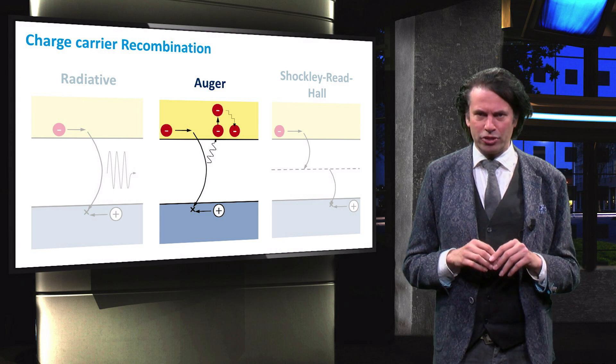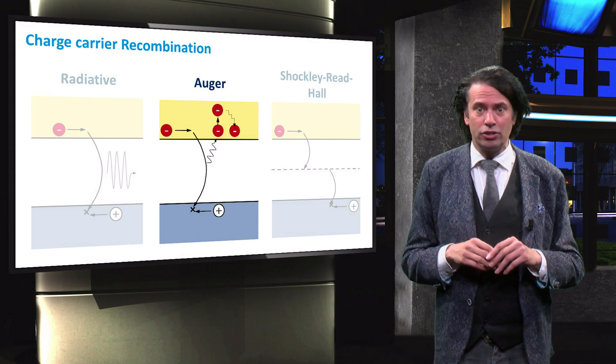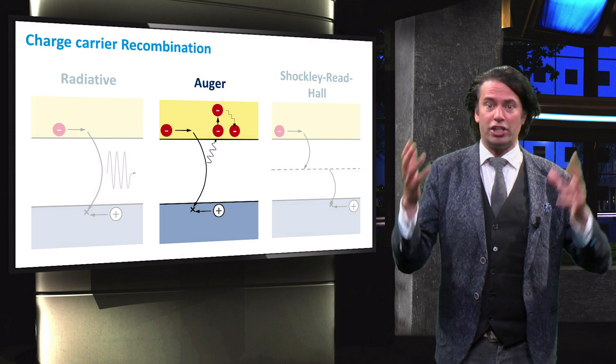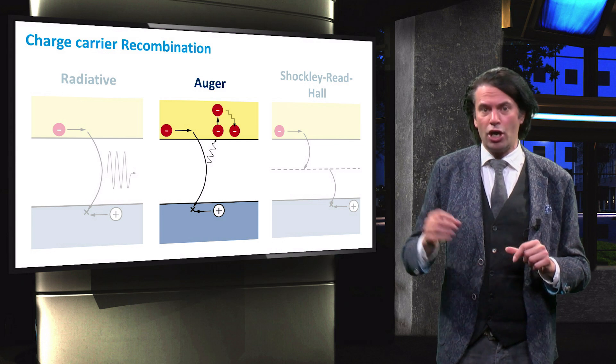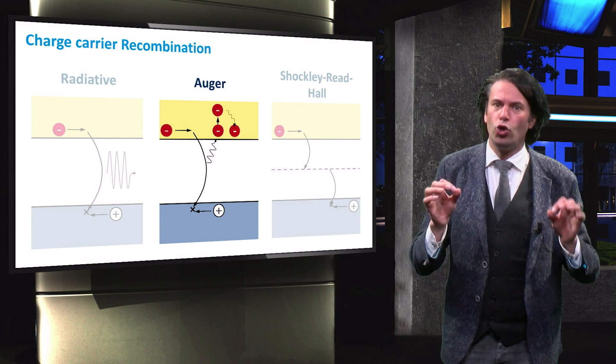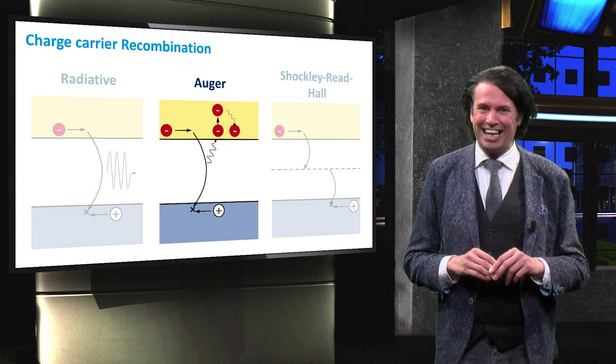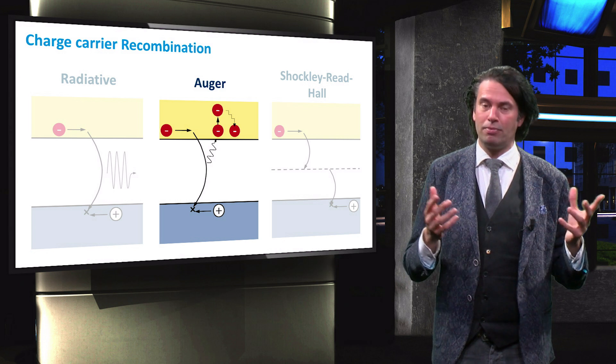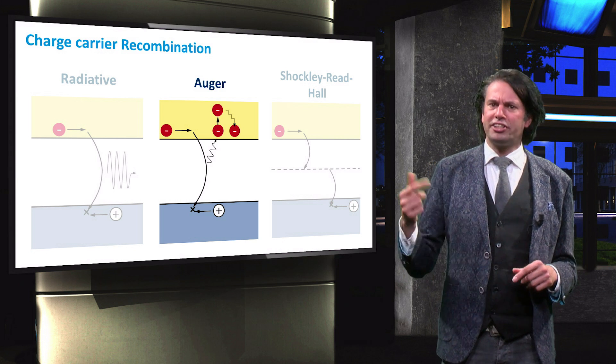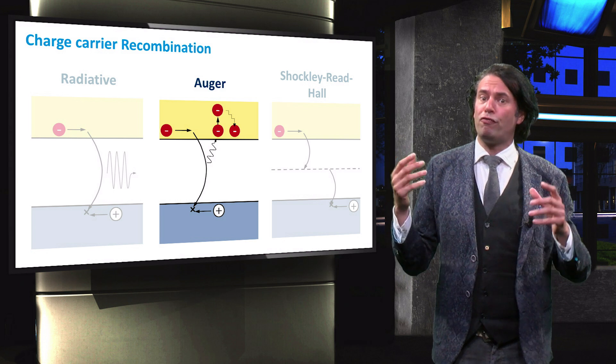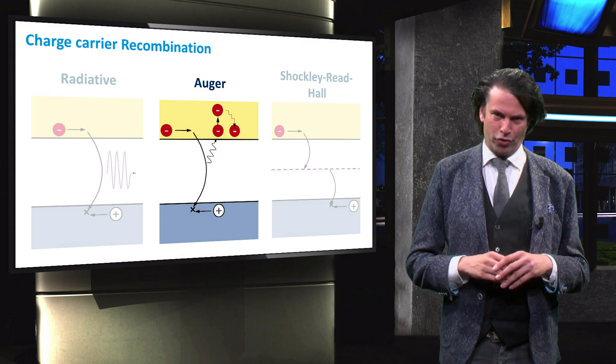However, for an n-type semiconductor under high injection conditions, when a very large amount of charge carriers are generated, Auger recombination might also become important for direct band gap materials such as gallium arsenide. Such high injection levels occur for example in concentrated photovoltaics.